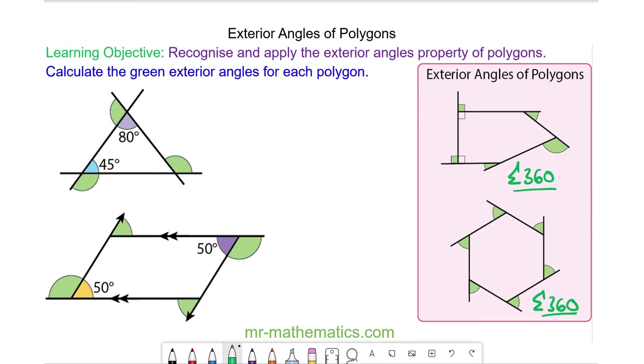We can use this property to work out the value of each of these green angles. We know this angle here will be 100 degrees because angles on a straight line add up to 180. This will be 135 degrees, 180 take away 45.